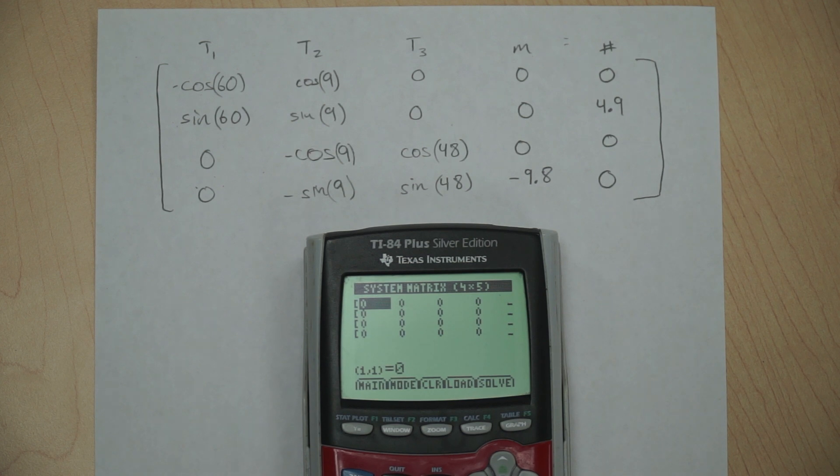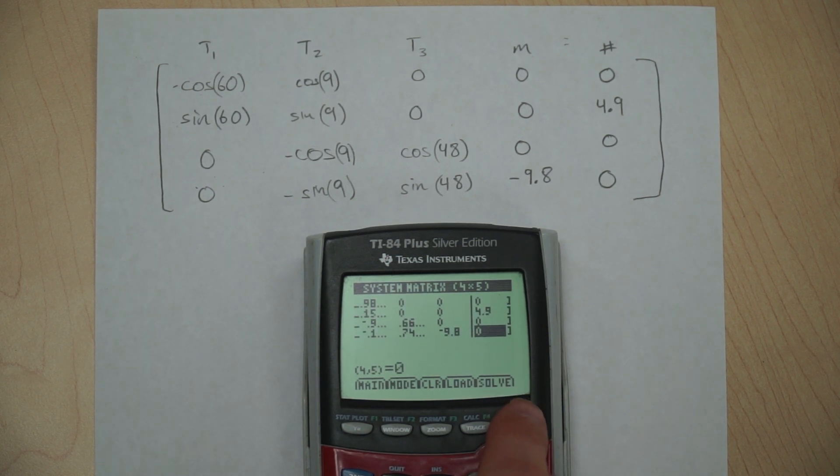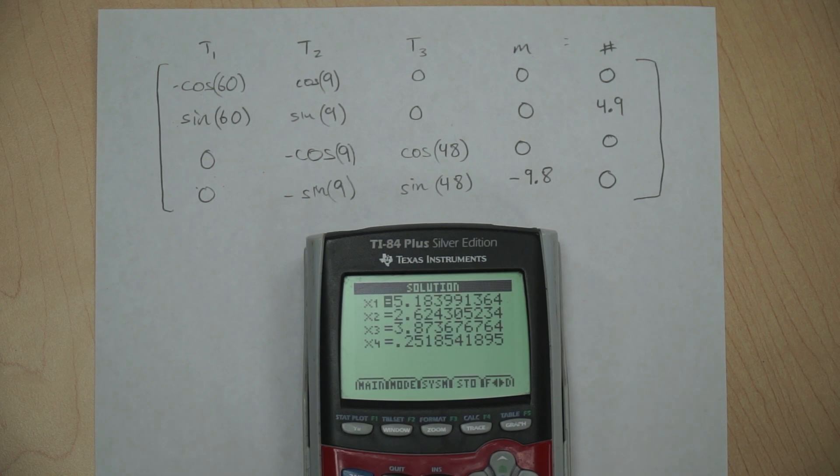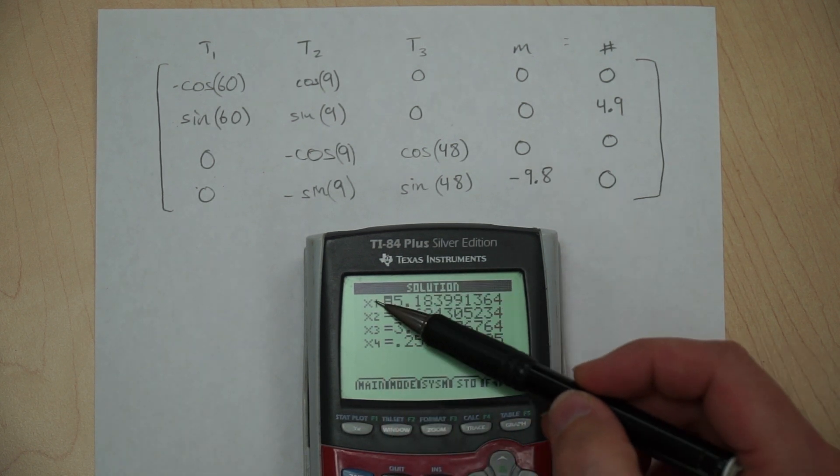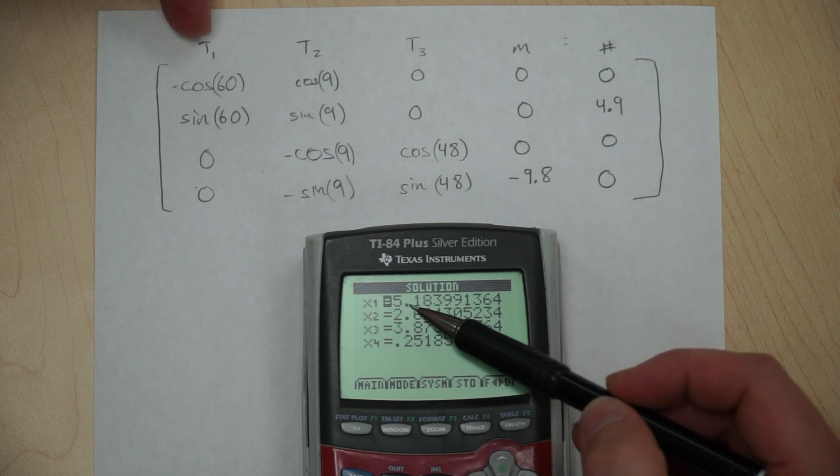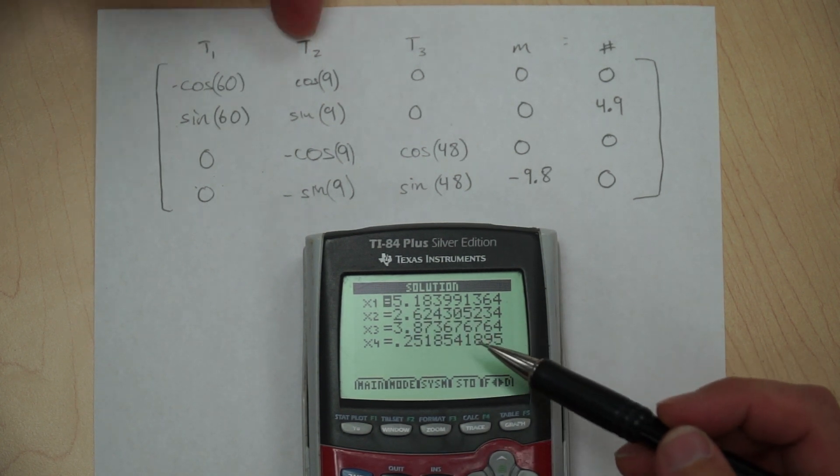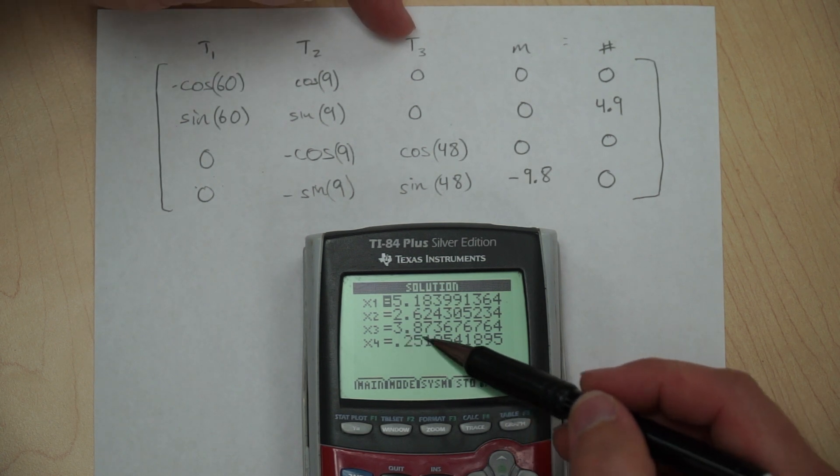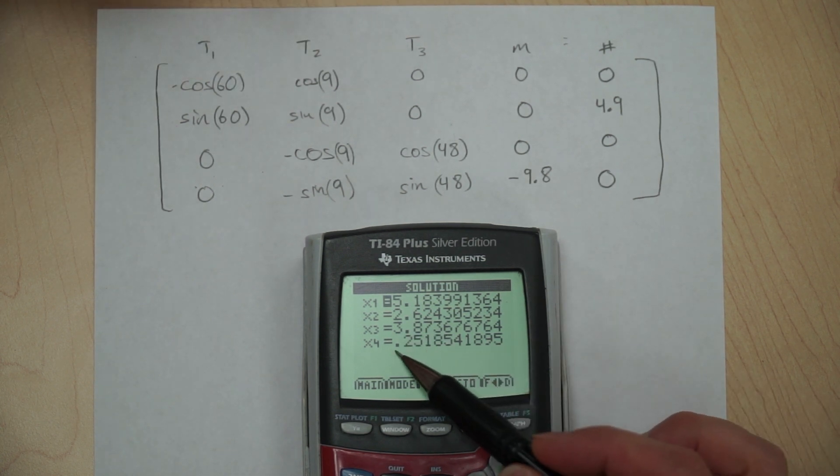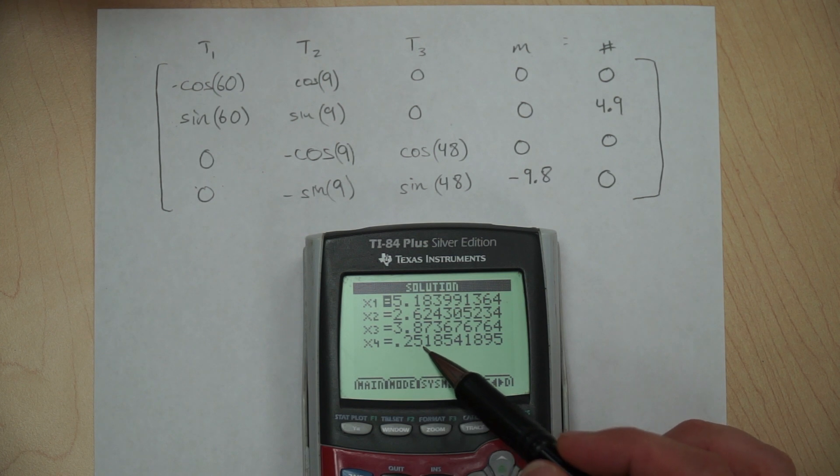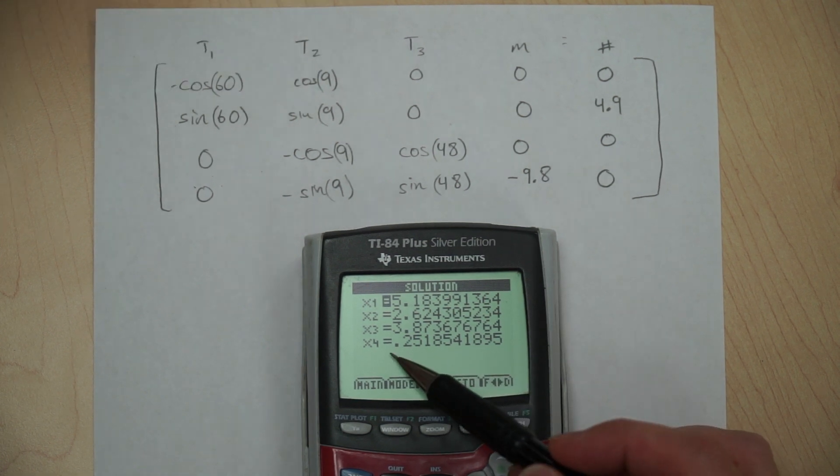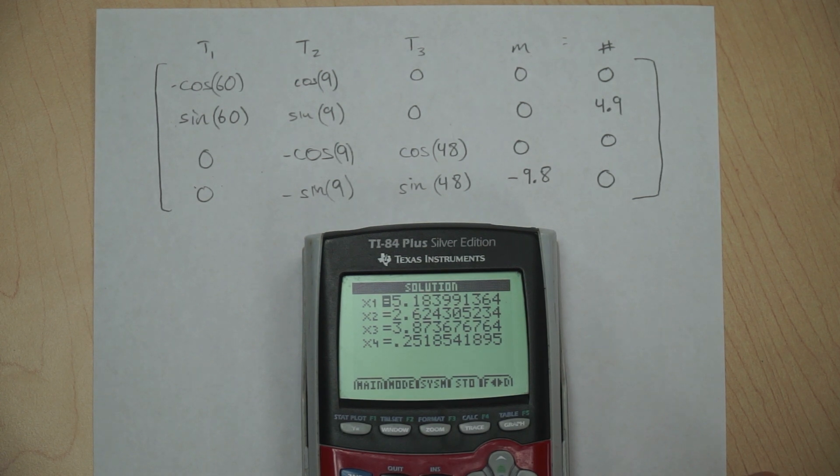Now I get to type this in, so I'm going to do this real quick. All right, now that we have everything typed in, we're going to go ahead and hit solve. And then it gives us our answers here. So X1 goes along with T1, so the T1 value is 5.1 newtons. T2 is 2.6 newtons. T3 is 3.87 newtons. And the number we're really looking for here is the .2518. So we're just going to call that about 252 grams. All right, let's head back to the board.